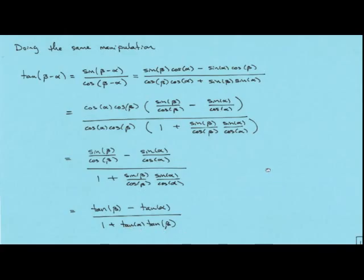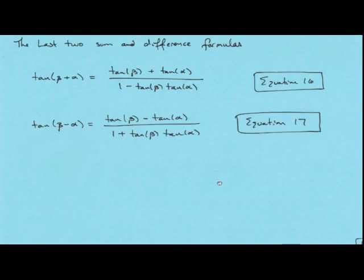Through the algebra and the trig identities, we end up with the last two sum and difference formulas: tangent of beta plus alpha equals tangent of beta plus tangent of alpha over 1 minus tangent beta times tangent alpha, and tangent of beta minus alpha equals tangent of beta minus tangent of alpha over 1 plus tangent beta times tangent alpha.